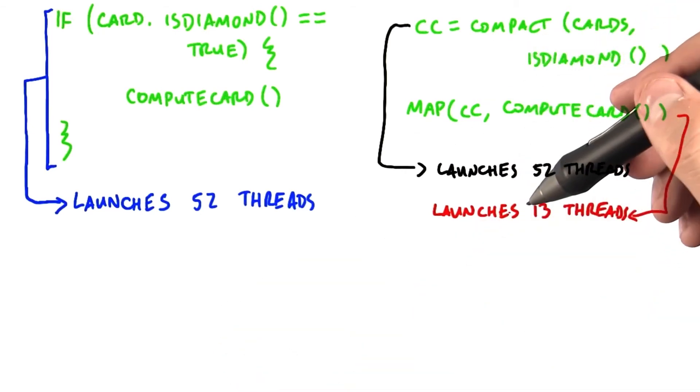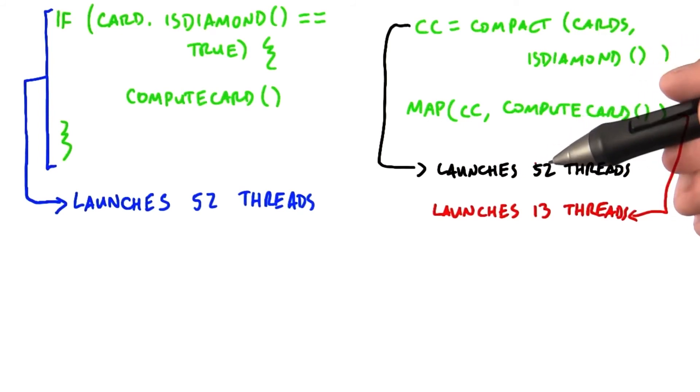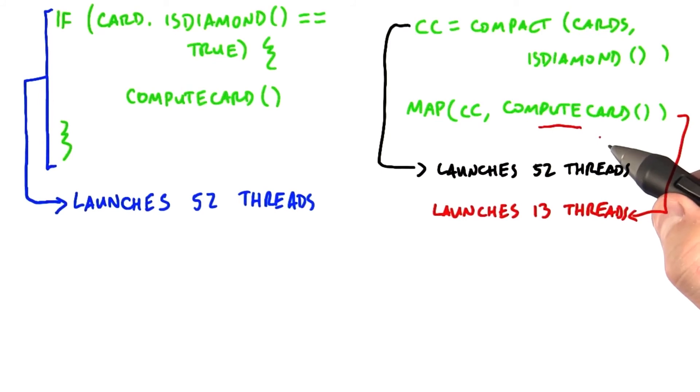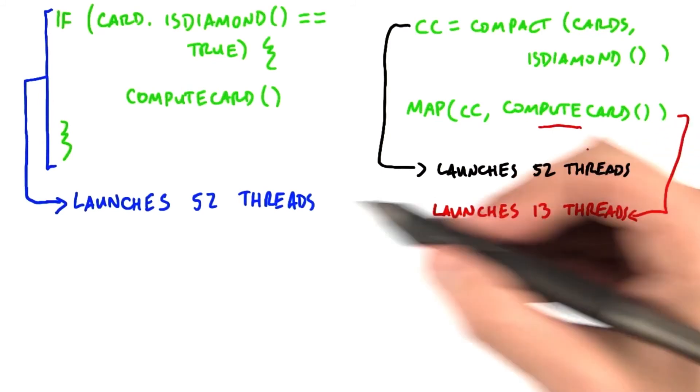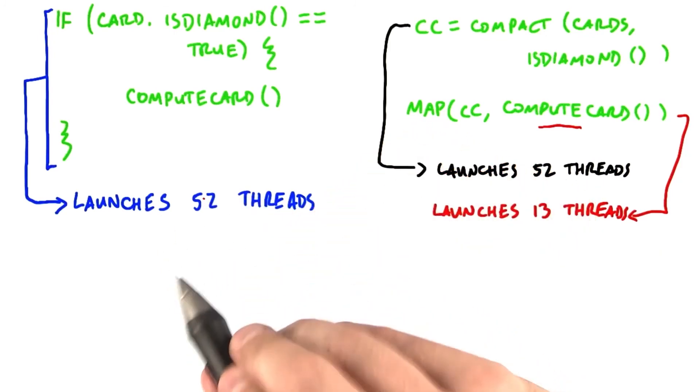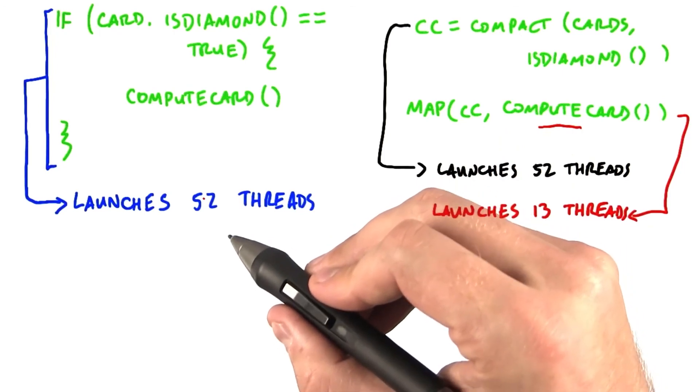The dense computation, on the other hand, incurs the cost of the compact, but then in the map step it only launches 13 threads. If the compute card routine is at all expensive, then the sparse approach loses, because we have to launch four times as many threads. Three quarters of those threads are going to be idle, while the other quarter of the threads are actually doing useful work.